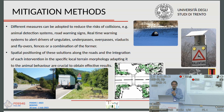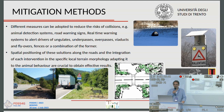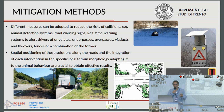Different mitigation methods can be adopted to reduce the risk of collisions: animal detection systems, road warning signs, real-time warning systems to alert drivers of ungulates, underpasses, overpasses, via ducts, and combinations of these interventions. The special positioning of solutions along roads and the integration of each intervention in the specific local terrain morphology, adapting to animal behavior, are crucial to obtain effective results.